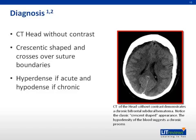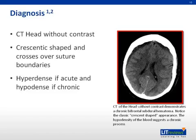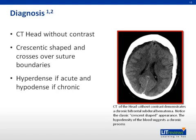Subdural hematomas are not confined by dural attachments at the cranial sutures, unlike an epidural bleed. This anatomical feature is important to remember as it helps differentiate an epidural hematoma from a subdural hematoma. Notice the dark or hypodense appearance of the lesion — blood will appear hypodense when chronic and hyperdense when acute. In some cases, associated soft tissue swelling outside of the skull can be a helpful clue when speculating the mechanism of injury.